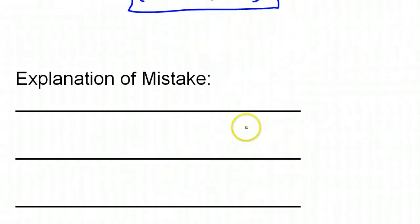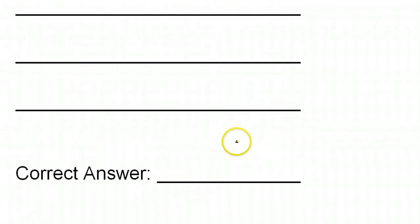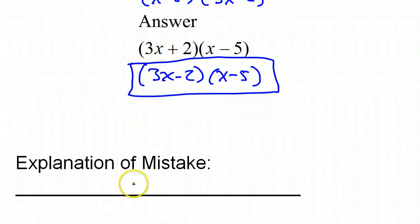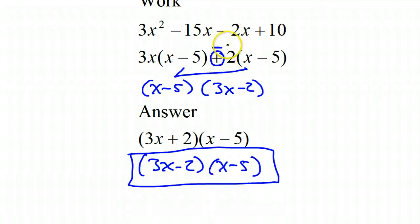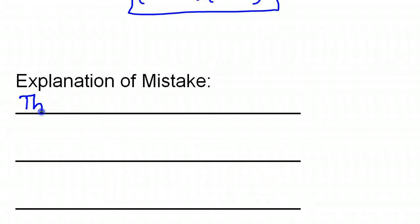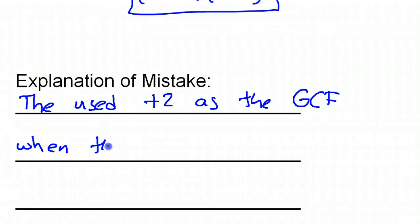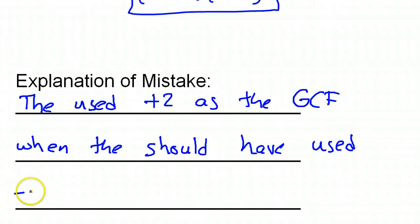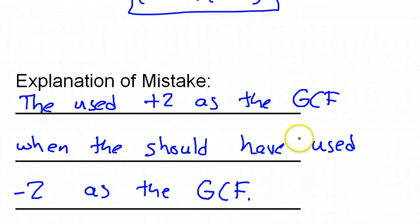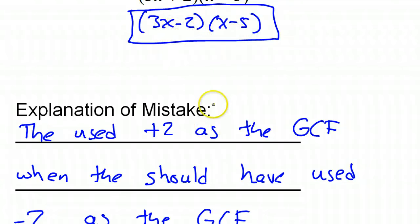At the bottom, we're supposed to put an explanation of the mistake in words. They forgot to pull out a negative 2 — they used positive 2 as the GCF when they should have used negative 2 as the GCF. And the correct answer is x minus 5 times 3x minus 2.